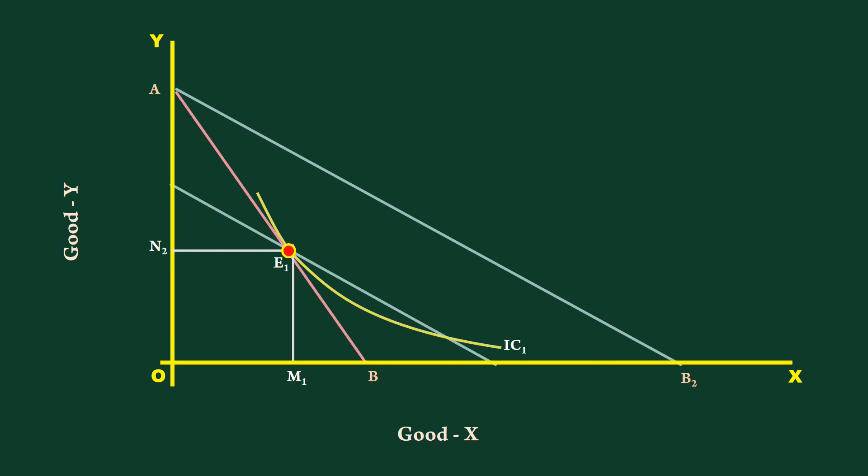The new price line is A1B1. Consumer cannot be in equilibrium at E1 because price line A1B1 cuts IC1 at that point.